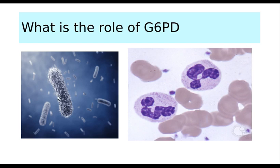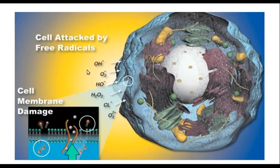Let us understand the immune system. Normally when bacteria enter the body, it is the immune cells — the neutrophils and macrophages — that attack the bacteria and destroy them. They produce a number of chemicals called free radicals or reactive oxygen species, which include H2O2, OH, nascent oxygen, superoxides, and many other such chemicals. These chemicals attack the cell membrane of the bacteria and destroy them. That's how the bacteria die.